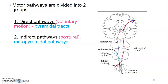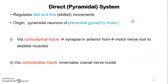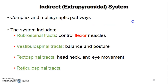Pyramidal pathways regulate fast, fine, and skilled movements. The origin is the pyramidal neurons of the precentral gyrus — that's the primary motor area — through the corticospinal tracts and corticobulbar tracts. Corticospinal tracts synapse in the anterior horn, and the motor nerve roots, which are second-order neurons, carry information to the skeletal muscles. Corticobulbar tracts are from the cerebral cortex primary motor area and terminate on the cranial nerve nuclei.